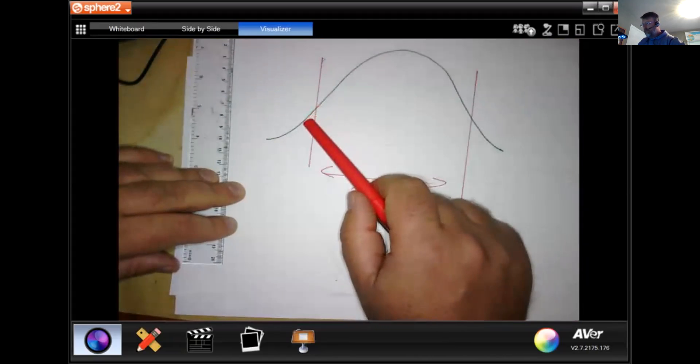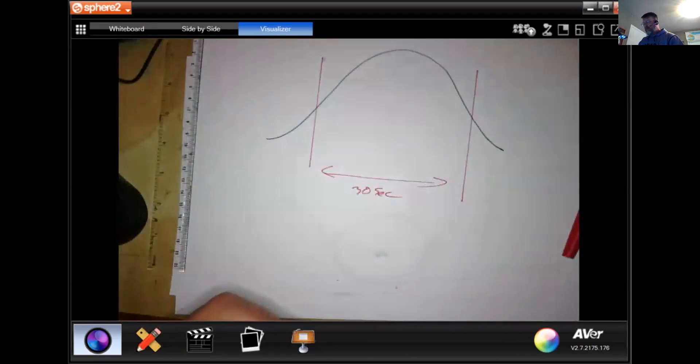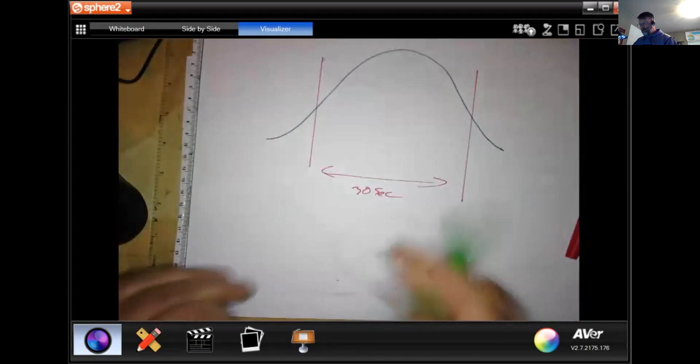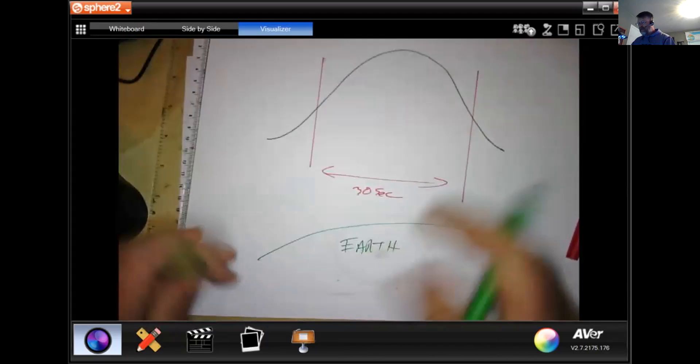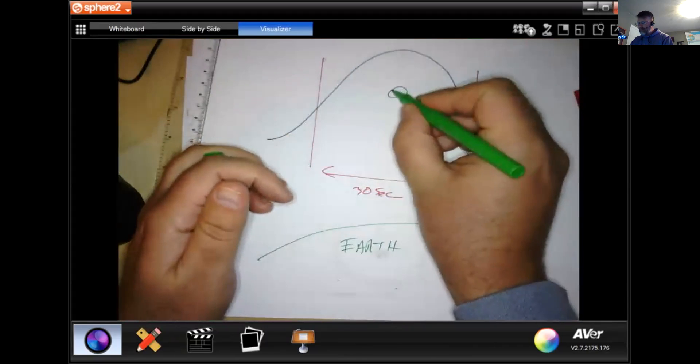But what would happen if this wasn't just with the earth down here? Okay, normally on an airplane here's the earth. What would happen if we expanded this out so much that this is the earth?